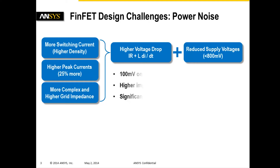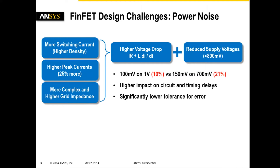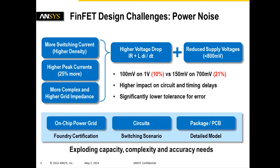A 100 mV drop on a 1V supply is just 10% of the supply, while a 150 mV drop on a 700 mV supply is more than a fifth drop in supply voltage. Simply put, there is much less margin for error. The need for a high-capacity, sign-off accurate power noise integrity solution is increasingly evident.